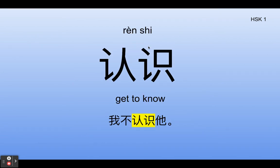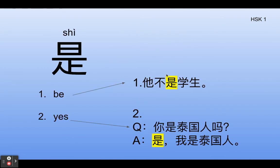Next one: 认识 — get to know. For example, 我不认识他 — I don't know him. 认识.